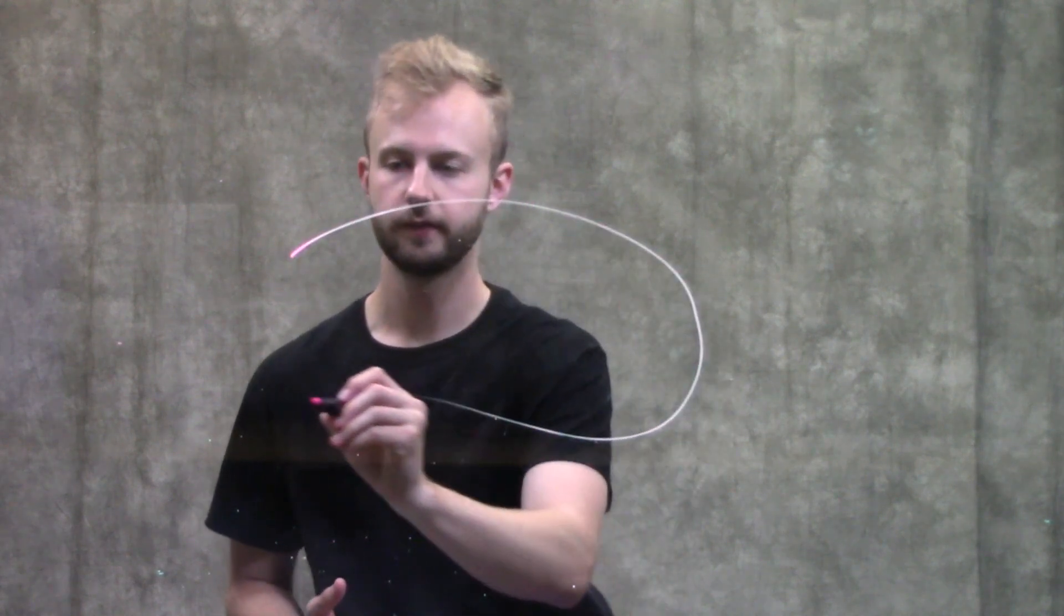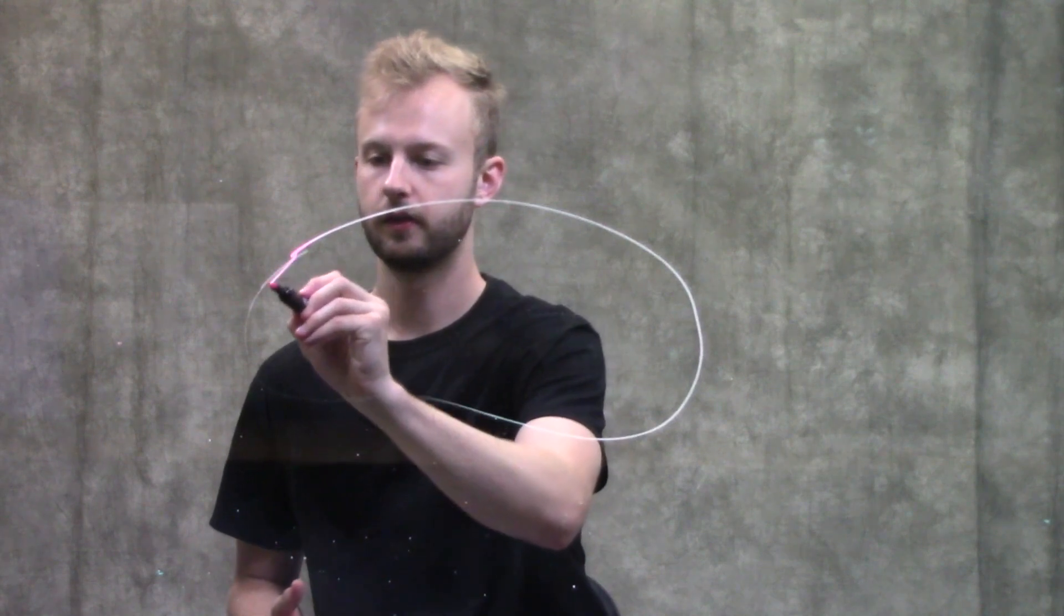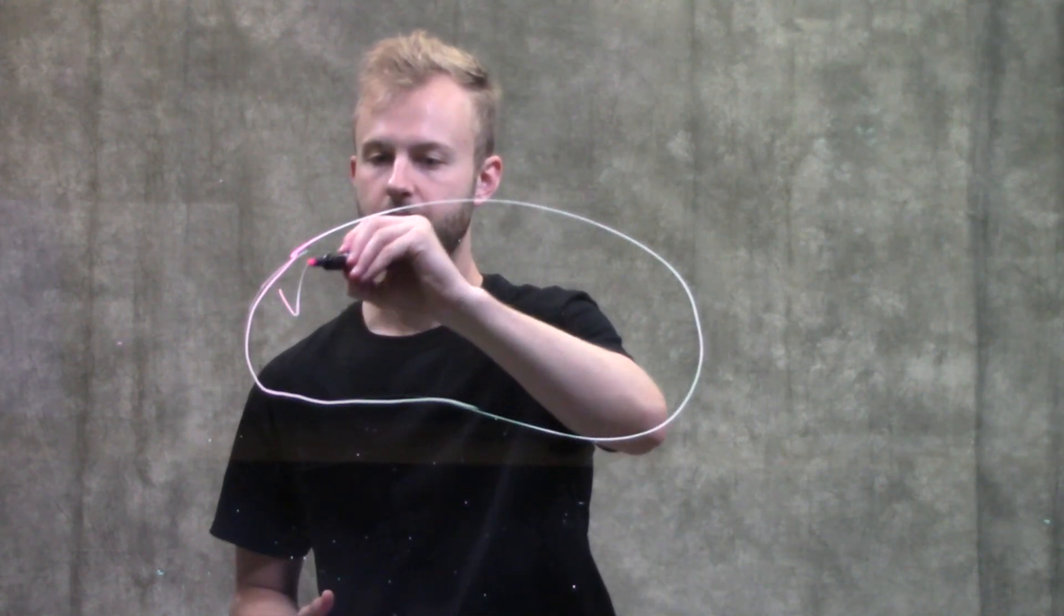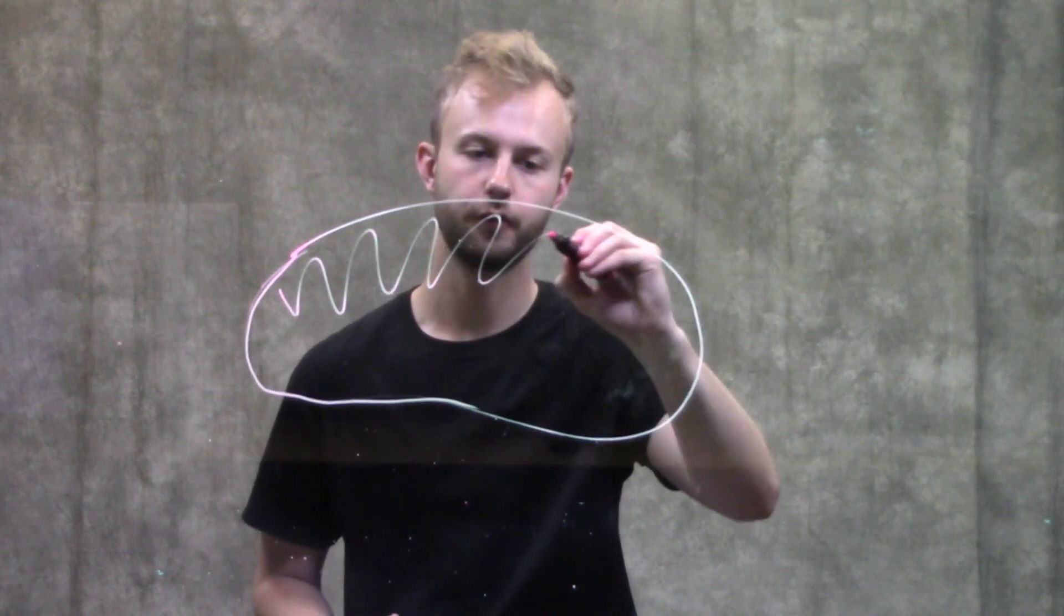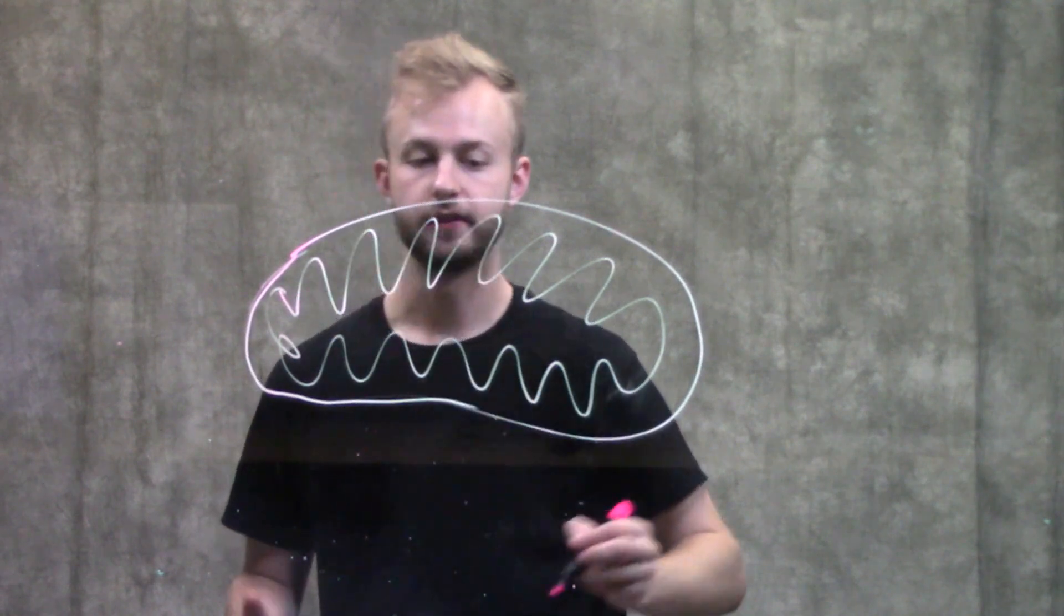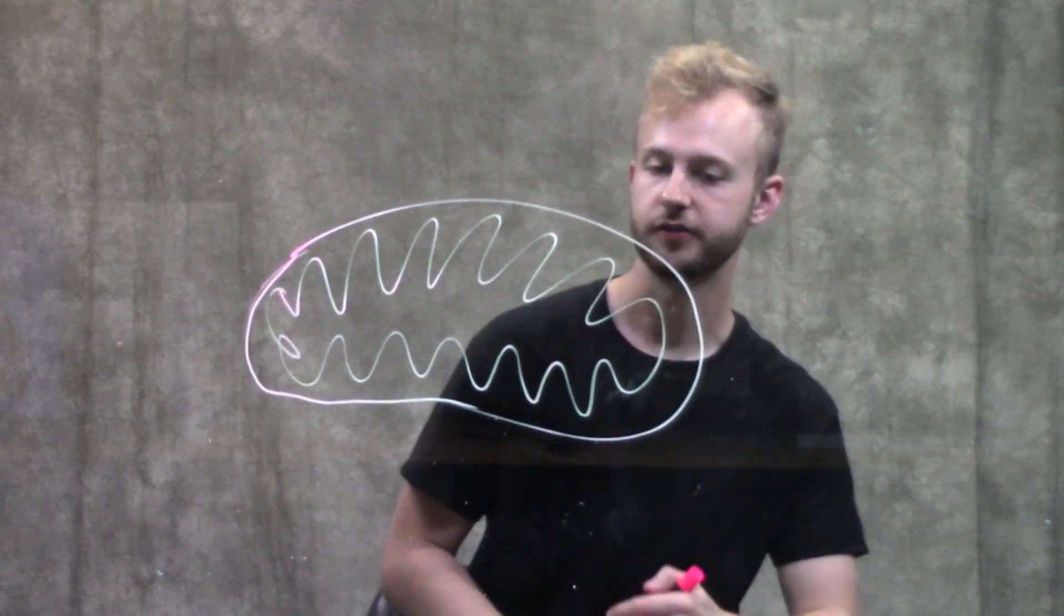Looking at the structure of a mitochondria, it has two membranes. We have this outer membrane and then we have a really highly folded inner membrane, and this is going to be really important in cellular respiration.